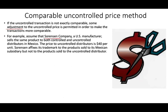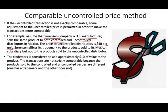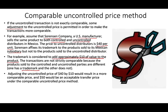For example, let's assume S company, a U.S. manufacturer, sells the same product to both controlled and uncontrolled distributors in Mexico. The price to the uncontrolled distributor is $40 per unit. However, the parent company affixes its trademark to the product sold to the Mexican subsidiary, but not to the product sold to the uncontrolled distributor. The trademark is considered to add approximately $10 of value to the product. The transactions are not strictly comparable because the products are different — one has the trademark. Adjusting the uncontrolled price of $40 by $10 would result in a more comparable price, and $50 would be an acceptable transfer price under the comparable uncontrolled price method.